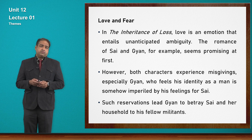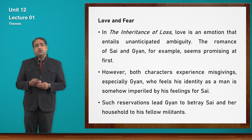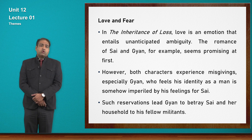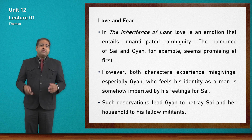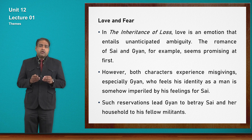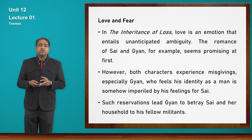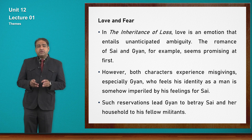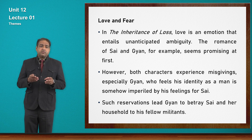The third theme is love and fear. In The Inheritance of Loss, love is an emotion that entails unanticipated ambiguity. The romance of Sai and Gyan seems promising at first — when we came to know they are in a romantic relationship, it seemed positive and promising. But later it had some kind of unanticipated ambiguity — something which was not expected by both parties and which changed and ruined their lives.